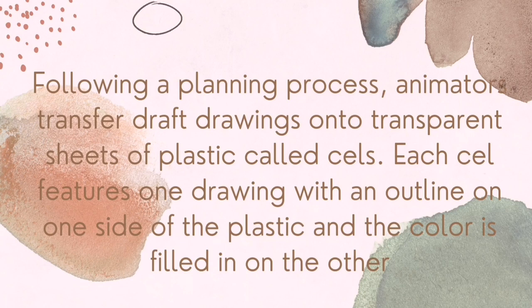Following a planning process, animators transfer draft drawings onto transparent sheets of plastic called cels. Each cel features one drawing, with an outline on one side of the plastic and the color filled in on the other side.